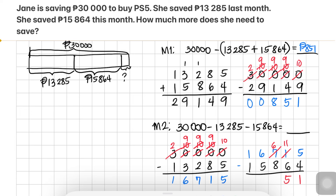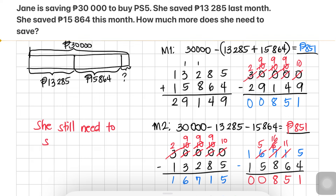6 hundreds minus 8 hundreds is not enough, so regroup from thousands: 6 thousands becomes 5 thousands, giving 16 hundreds. 16 hundreds minus 8 hundreds is 8. 5 thousands minus 8 thousands — wait, 5 minus 5 is 0, and 1 minus 1 is 0. The answer is again 851 pesos. So Jane still needs to save 851 pesos.